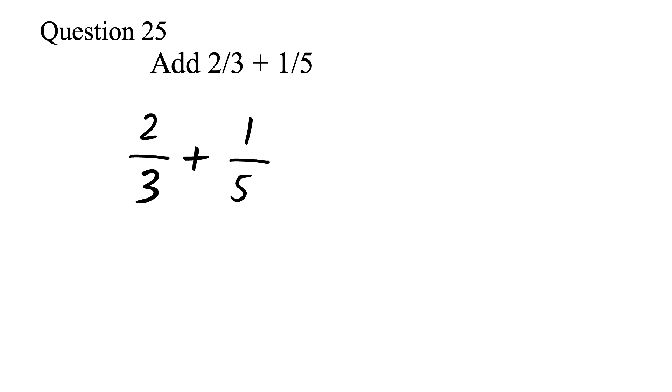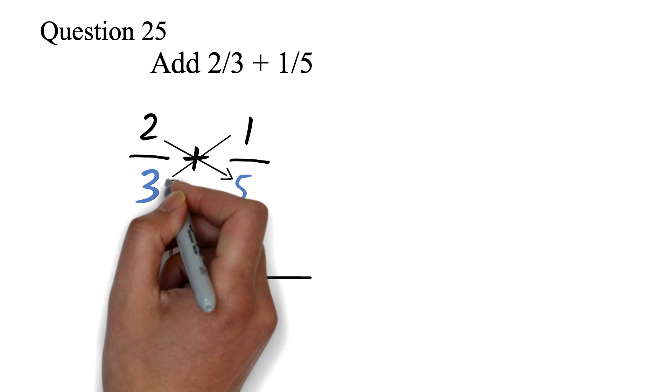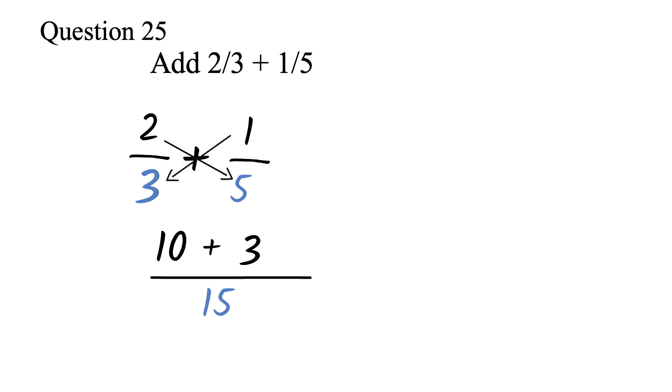Method 1 is the cross-multiplication method. The first step is to multiply the denominators. We have 3 times 5. This will give us 15 as our denominator. Then we will cross-multiply. 2 times 5 is 10. Plus, 1 times 3 is 3. 10 plus 3 is 13. So we have 13 over 15 as our final answer.